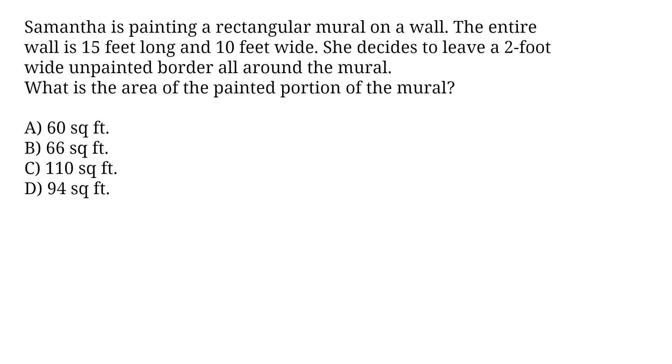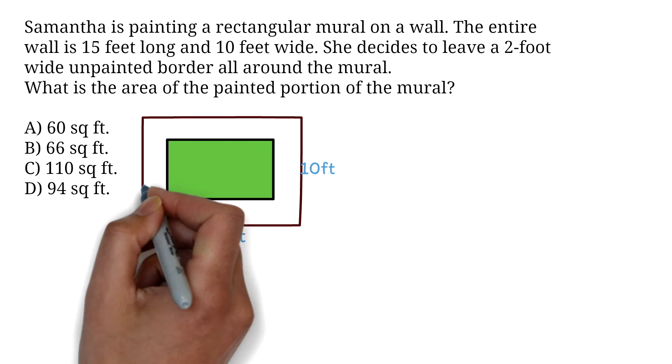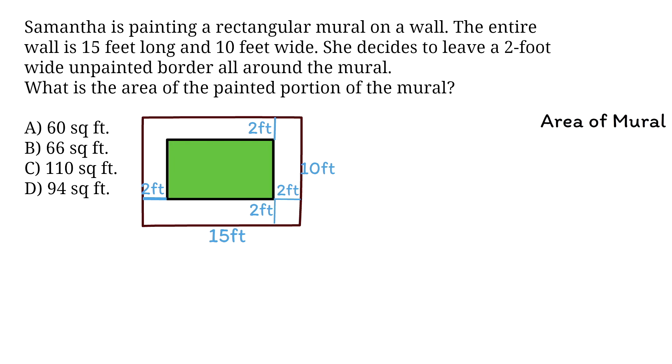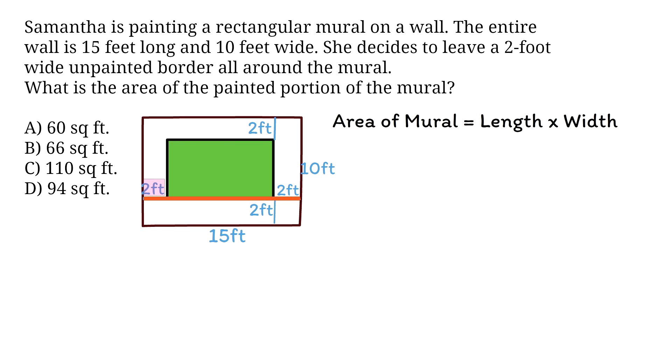Okay, let's solve the question. For questions like this, it's a good practice to get a diagram so you can picture what is going on. Here is our wall. This is the painted portion of the mural. That's the area we are finding. We have been given the dimensions of the wall as 15 feet long and 10 feet wide. We are told she left 2 feet around the mural. Area of a rectangle is length times width. This formula will be given to you on the GED.